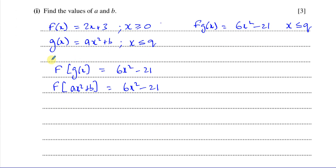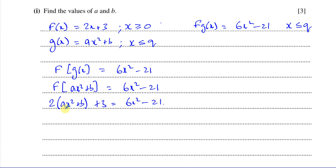What we can do now is put g(x) inside the function f. We replace x with ax² + b, giving us 2(ax² + b) + 3 = 6x² − 21. Expanding the bracket: 2ax² + 2b + 3 = 6x² − 21.